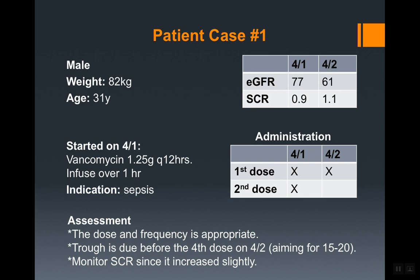Now let's go through patient cases to develop the thought process for evaluating patients on vancomycin. Patient case one is a male. We have the weight and age listed, as well as the GFR, creatinine clearance, and serum creatinine. Vancomycin was started on April 1st at 1.25 grams every 12 hours, infused over one hour. The indication is sepsis, and the patient has received three doses. Based on the patient's weight and age, 1.25 grams Q12 is appropriate.